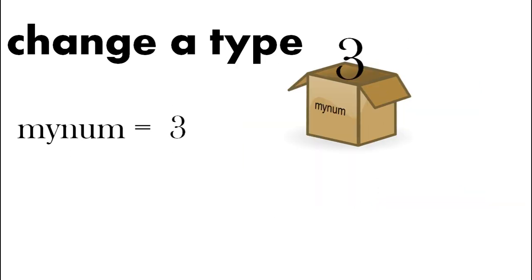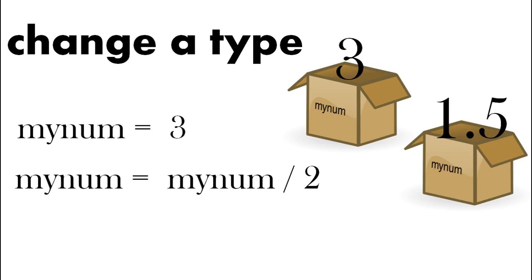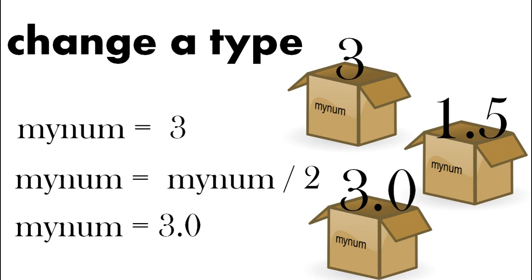You can also change type. Remember we had integer, floating point, and string. Here we've got mynum equals three. If we divide that by two equals one point five, which cannot be an integer. So that will mean it's a float. So Python will change it to a float. If you want to change to a float yourself you can give the number a value and use a decimal place. So here three point zero means the number's a float. So mynum is a float rather than an integer.